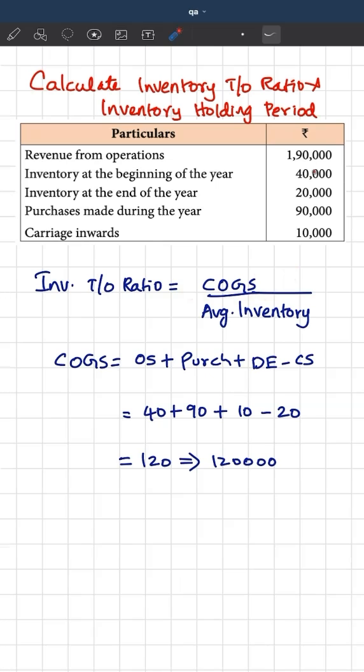It is simple. It is opening inventory added by purchases made during the year, added by direct expenses, and subtracted by closing inventory. That's what you see here. So 40 plus 90 plus 10 minus 20, that gives 120, which is 1,20,000.